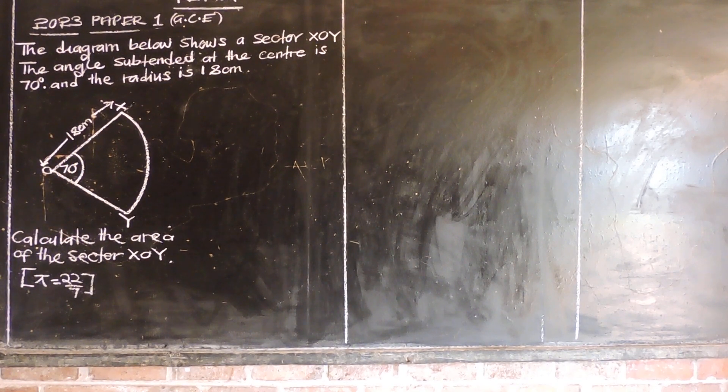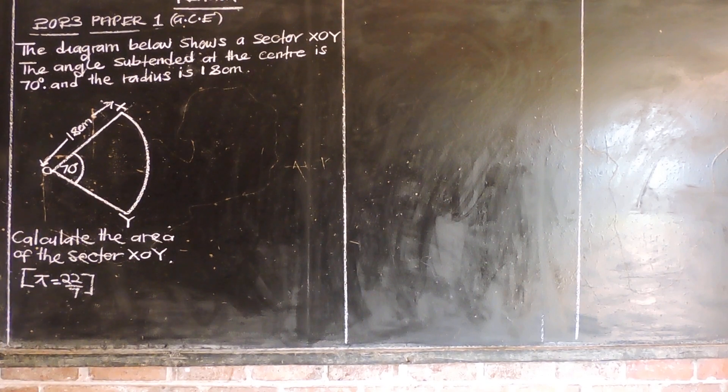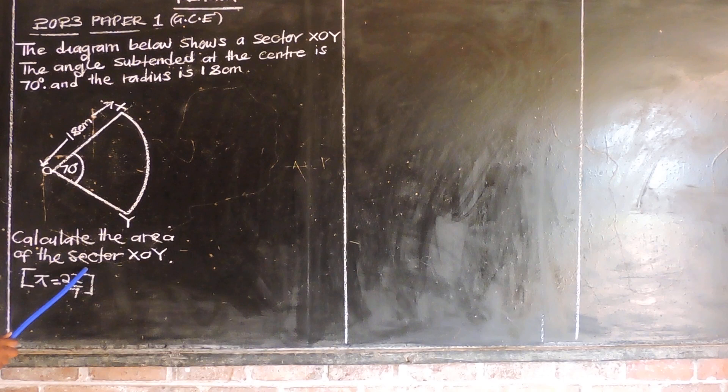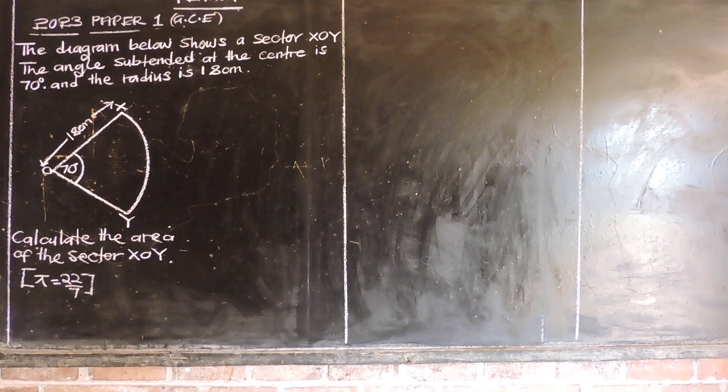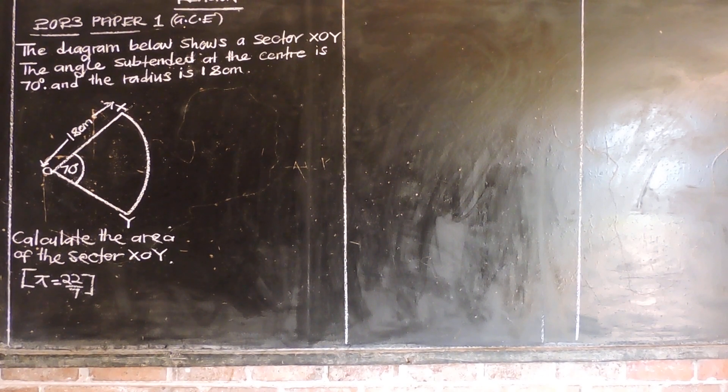So this is 18 centimeters and this is what 18 centimeters is. Then we are trying to calculate the area of the same sector. Calculate the area of the sector X, O, Y, taking pi as 22 over 7.